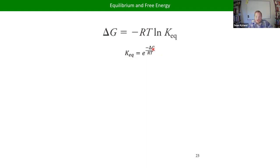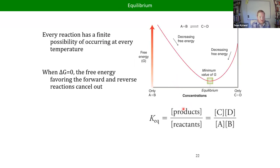That means if we know delta G naught, we can predict what K is. If delta G is negative, you get a negative of a negative — a positive exponent — which means K is going to be greater than one. It might be small, but it'll still be greater than one. That means equilibrium favors the products, because the numerator of your equilibrium expression is bigger than the denominator. If K is greater than one, you make more products than reactants at equilibrium; if K is less than one, you have more reactants than products.